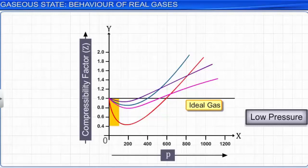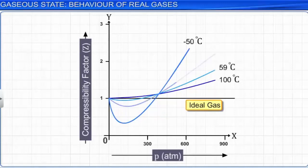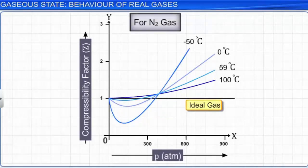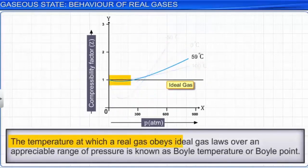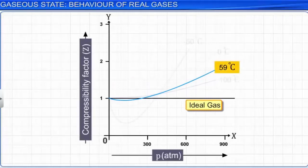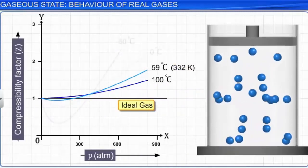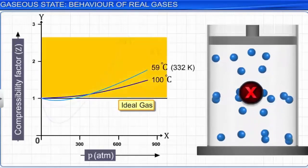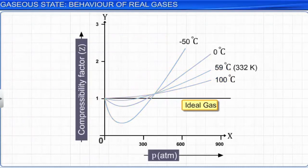The graph shown here depicts the effect of temperature on the deviations shown by nitrogen gas. The temperature at which a real gas obeys ideal gas laws over an appreciable range of pressure is known as Boyle temperature or Boyle point. The Boyle point depends upon the nature of the gas. The Boyle temperature of nitrogen is 332 Kelvin. Above Boyle temperature, real gases are difficult to compress and the Z value is greater than 1. Below Boyle temperature, real gases first show a decrease in Z, reach a minimum, and then the Z value increases continuously with increase in pressure. Thus at low pressure and high temperature, gases show ideal behavior.